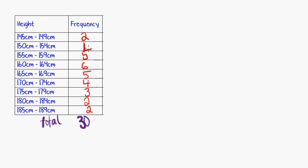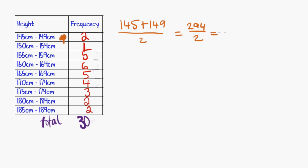What about calculating the mean from a frequency table when you don't have the original data preserved? Here's a frequency table from a previous video broken down into intervals. There was a frequency of 2 within one range, but we don't know exactly what those data points were. So what we do is find the midway point between the bottom and the top of each range, and use that number as the basis for calculating the mean — we make a guess using the midpoint. Halfway between 145 and 149 is 145 plus 149 divided by 2, which is 294 divided by 2, equalling 147.